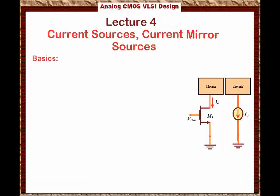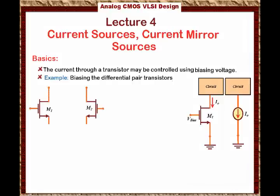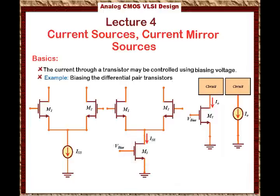The current through the transistor may be controlled using a biasing voltage. For example, biasing the differential pair transistors in the differential amplifier. Remember in the differential amplifier, we have transistors M1 and M2 connected to the current source, and the current through that current source is ISS. If we would like to implement this current source, we replace it with a transistor, which we can call M3, and we bias that transistor at V_bias such that the current flowing through it is ISS. That's how we implement the current source.